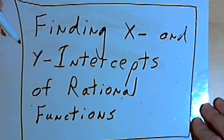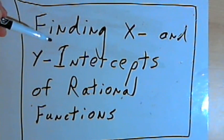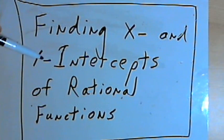The whole trick here is to remember that the x-intercept, or x-intercepts, occur whenever y equals 0. And the y-intercept will occur when x equals 0. So let's try a couple of examples and see how this works.